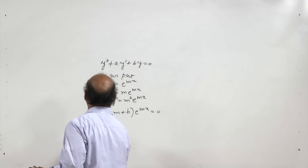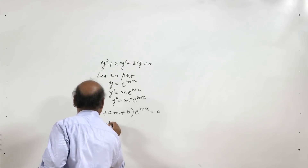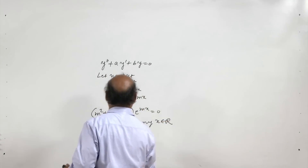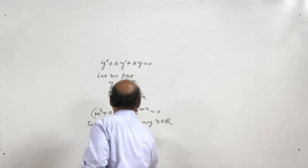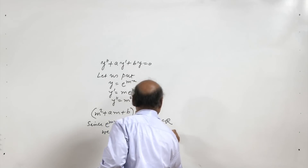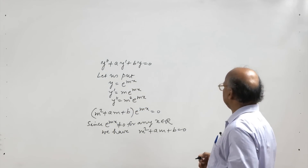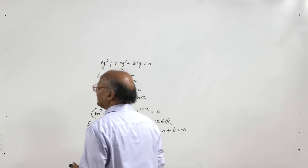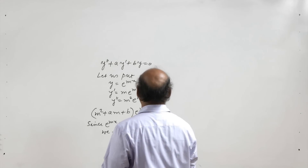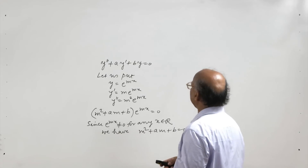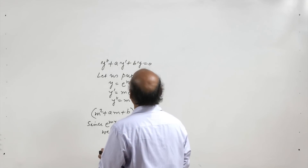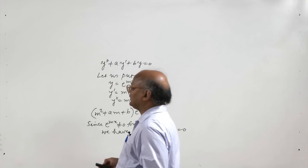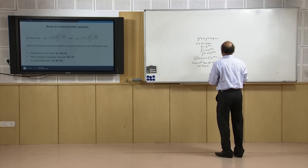Since e^(mx) is never zero for any x ∈ ℝ, we have m² + am + b = 0, which is a quadratic equation in m. This equation is called the characteristic equation or auxiliary equation. By obtaining the roots m₁ and m₂ of this equation, we get solutions y = e^(m₁x) and y = e^(m₂x) of the given differential equation.